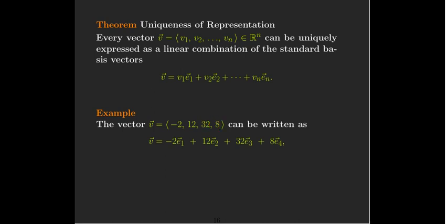So, I can write that vector v as negative 2 times e1, 12 times e2, plus 32 times e3, and finally plus 8 times e4.